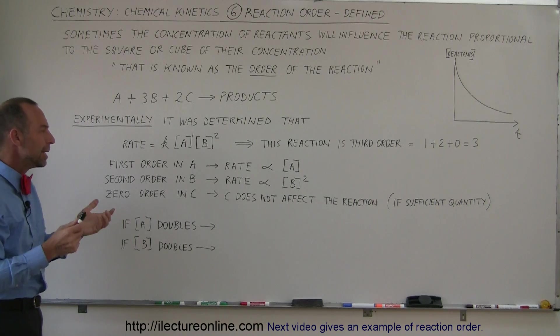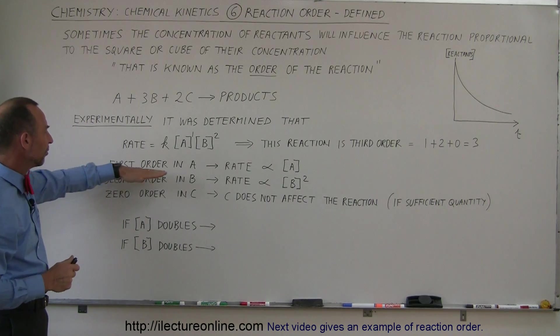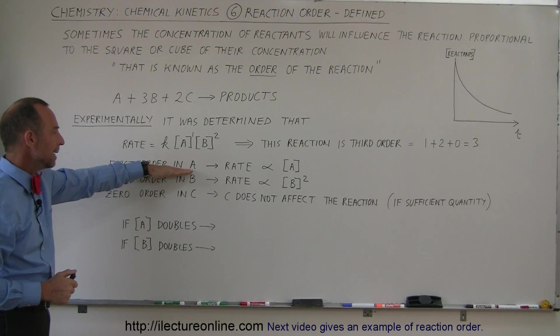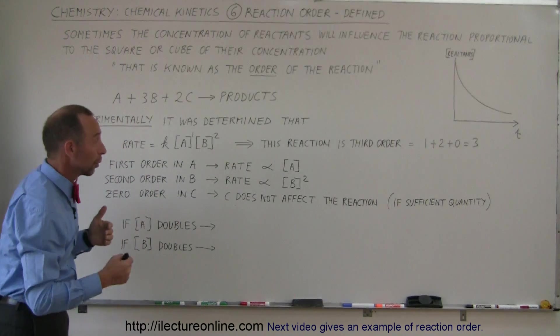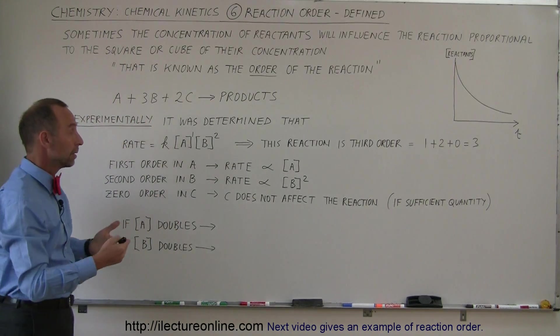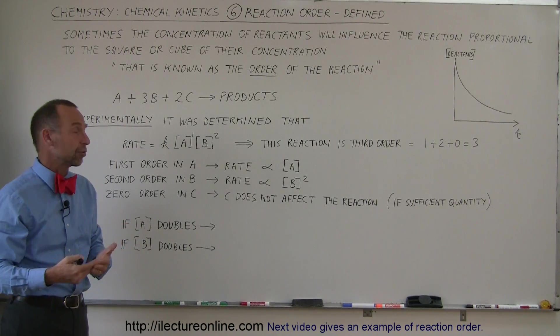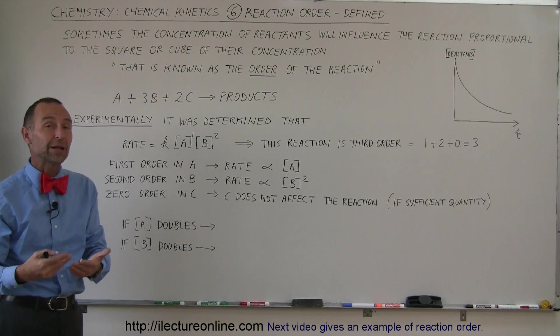Now what does that really mean? Well since we have a first order in A, that means that the rate is directly proportional to A. In other words, if you double A then you'll have twice the rate of the reaction. If you triple A you'll have 3 times the rate of the reaction.